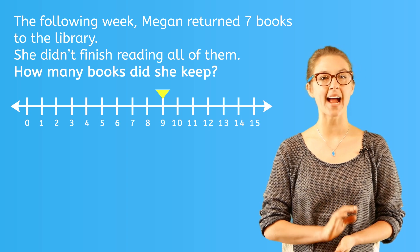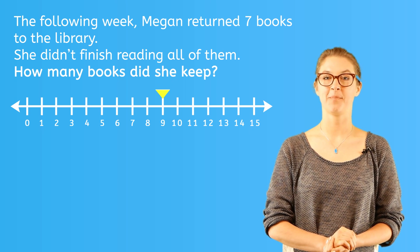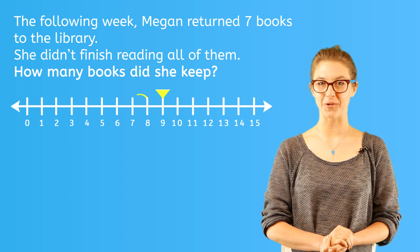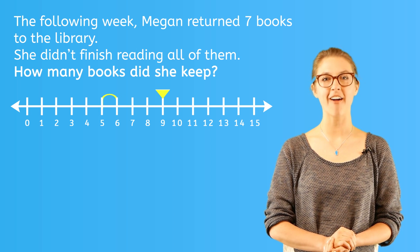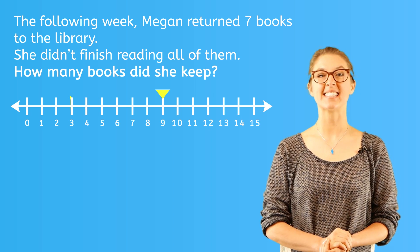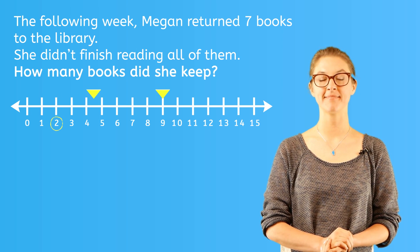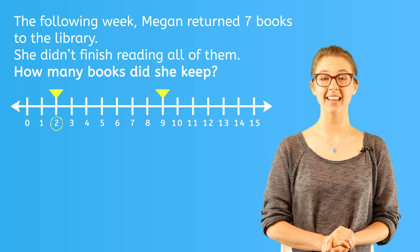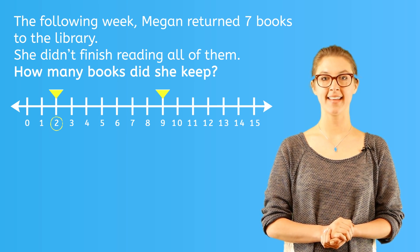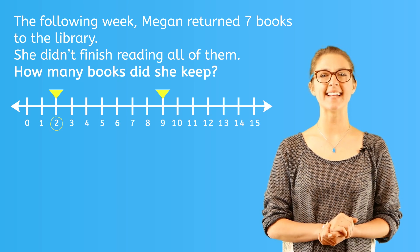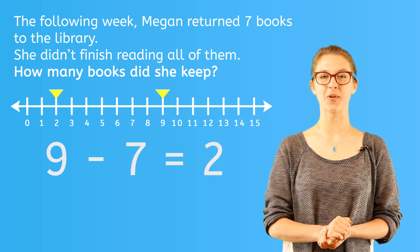We'll subtract by moving left one, two, three, four, five, six, seven times. That leaves Megan with two books. That makes sense since nine minus seven is two.